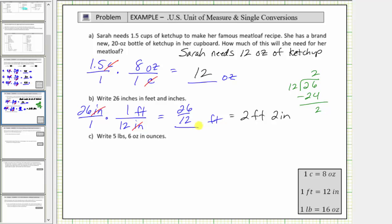Just to make sure this makes sense, 26 inches is equal to 12 inches plus 12 inches plus 2 inches. And 12 inches is equal to 1 foot, so we have 1 foot plus 1 foot plus 2 inches, which does give us 2 feet, 2 inches.